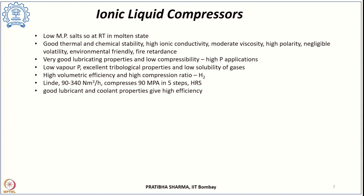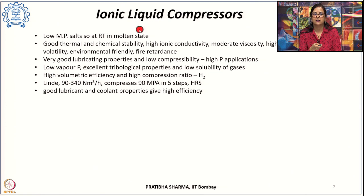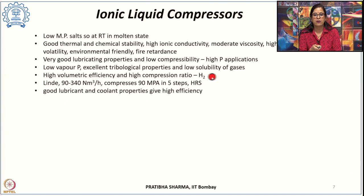Ionic liquids have very low compressibility, making them ideal for hydrogen compression, and using these ionic liquid compressors we can achieve high pressures. The working principle is the same as other liquid compressors; the only difference is the liquid used is an ionic liquid. This ionic liquid has a low vapor pressure, very good tribological properties, and low solubility of hydrogen, ensuring very low loss of hydrogen. These compressors are highly volumetrically efficient and can provide high compression ratios. The well-known Linde company produces ionic liquid compressors.